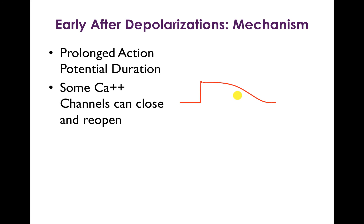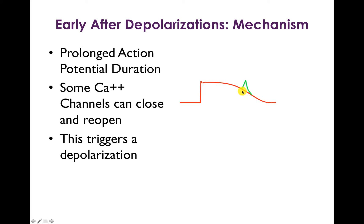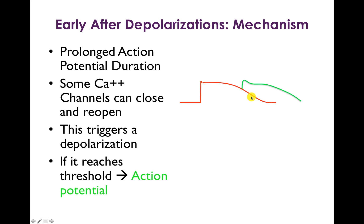What happens in this instance is that some of the calcium channels, which were responsible for maintaining the plateau phase of phase 2 of the depolarization and have closed, by this time in phase 2 or phase 3 of the action potential, they're actually ready to reopen again. And so they can trigger a depolarization. If that depolarization hits threshold, it can trigger another action potential. So this is literally the trigger in Torsades.